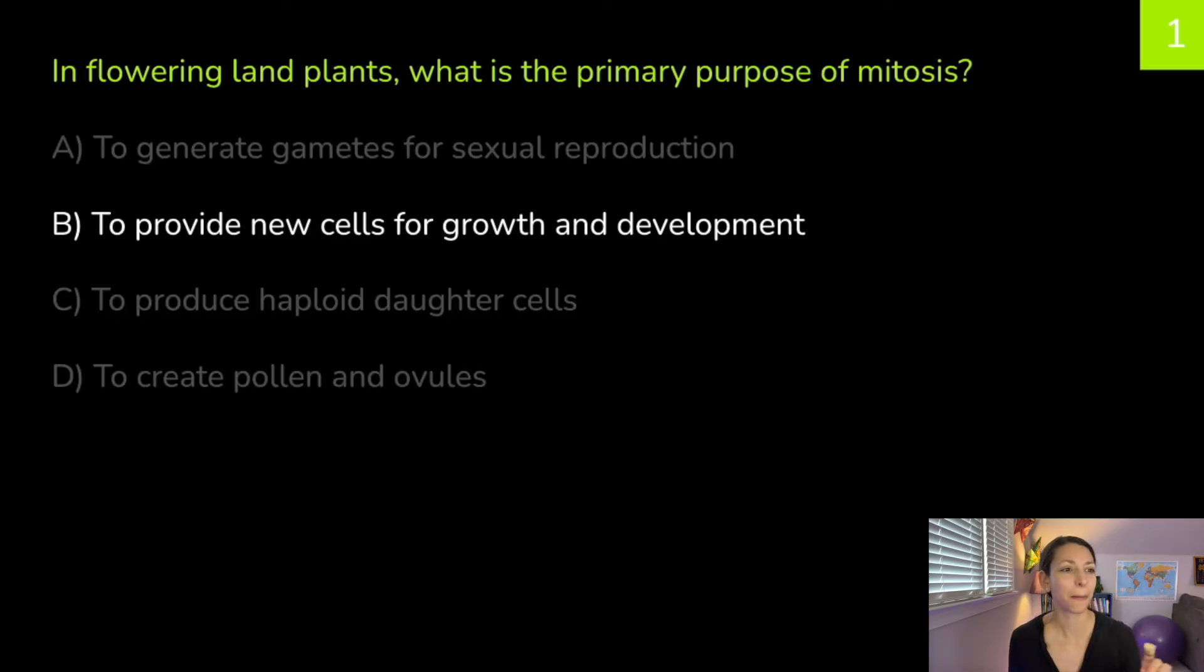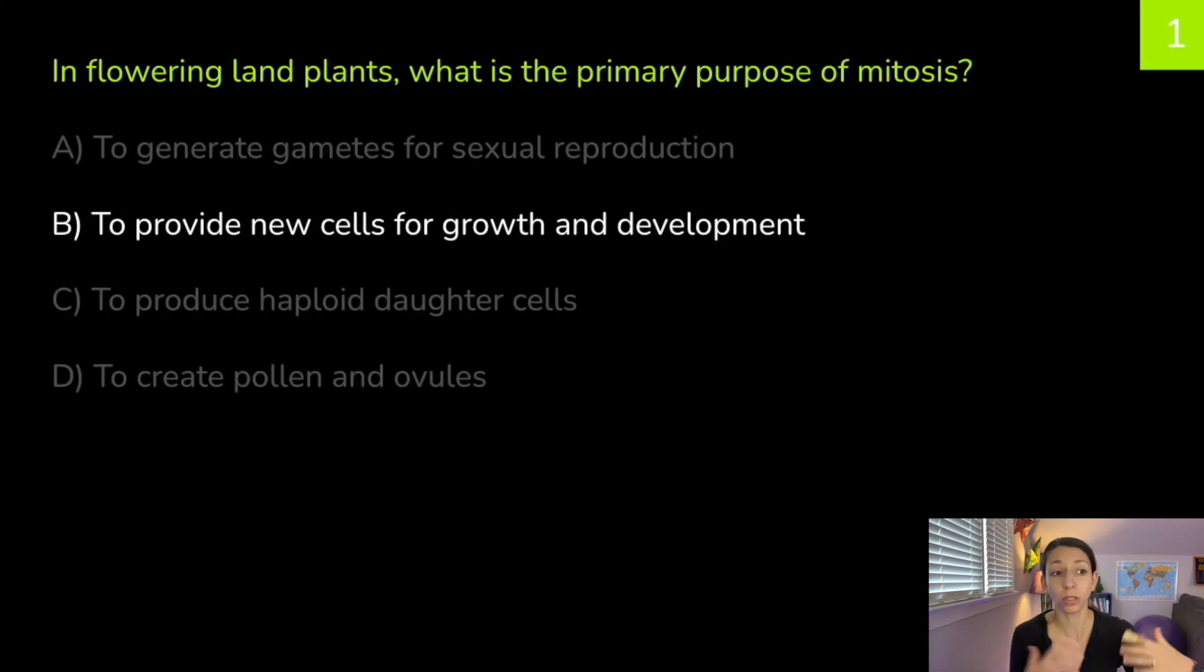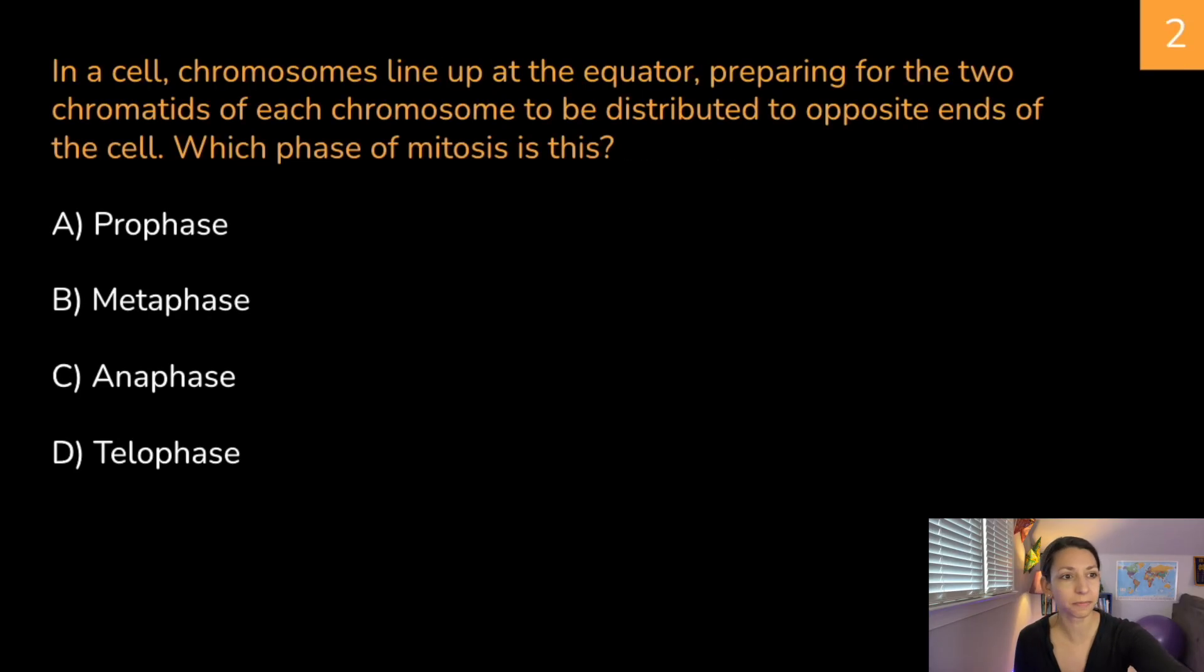Correct answer is B, to provide new cells for growth and development. All the other ones are kind of in reference to meiosis. So gametes for sexual reproduction usually are haploids. Again, that's answer C. And then pollen and ovules. These are also sex cells in the plant. In multicellular organisms, mitosis is there for growth and development. Flowering land plants are multicellular, so this is the most appropriate choice here. Some organisms do undergo mitosis in order to reproduce, just not the larger multicellular ones.